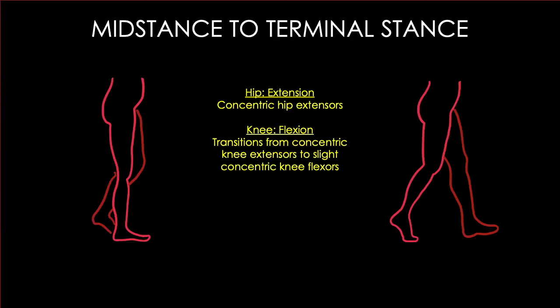From initial swing to mid swing: the hip is still flexing — concentric hip flexors. The knee is still flexing — concentric knee flexors. Now we have ankle dorsiflexion occurring because we have to clear the foot from the ground. We've transitioned from the plantar flexion needed to push off, and now we need rapid dorsiflexion. So we're generating hip flexion, knee flexion, and ankle dorsiflexion — all concentric, a lot of energy generation.